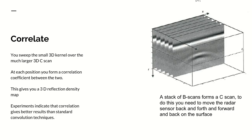Now what we do is we take our kernel and sweep it through the three dimensions. And at each possible position, each pixel position that you can sweep it through, we correlate the kernel with the C-scan.